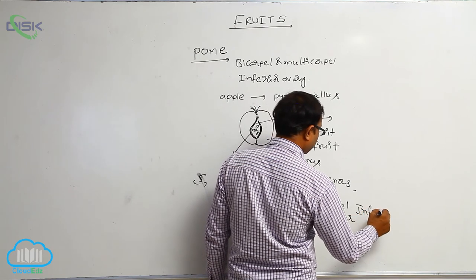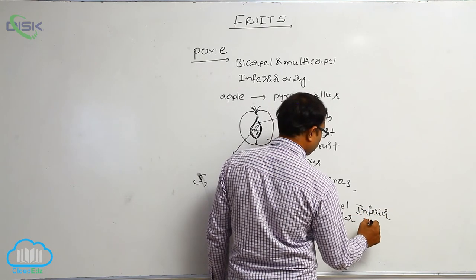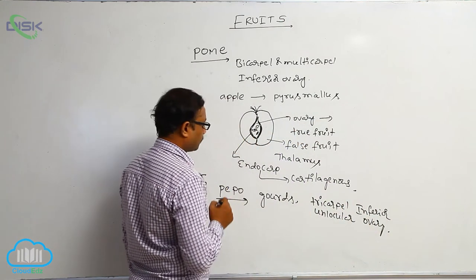Both are inferior ovary. The remaining are all superior ovary. That is known as Pepo gourd.